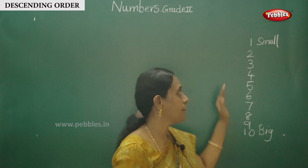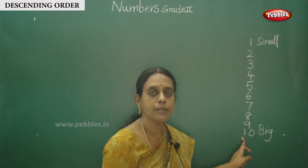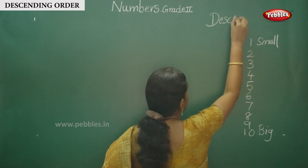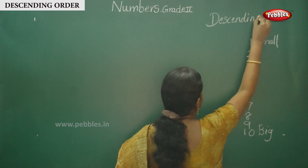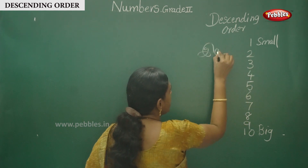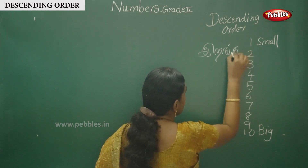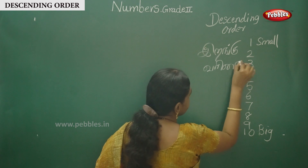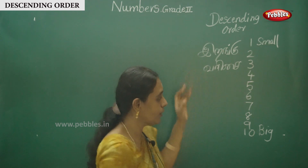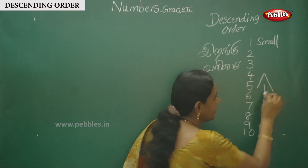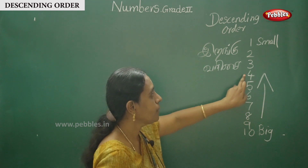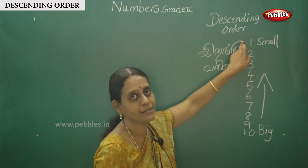Irangu varusai — how do you write it? The bigger number — yengi irikku. Okay, first: our topic is descending order — write the spelling. Descending order means irangu varusai — the opposite of eru varusai. Descending order means reversed: 10, 9, 8, 7, 6, 5, 4, 3, 2, 1.